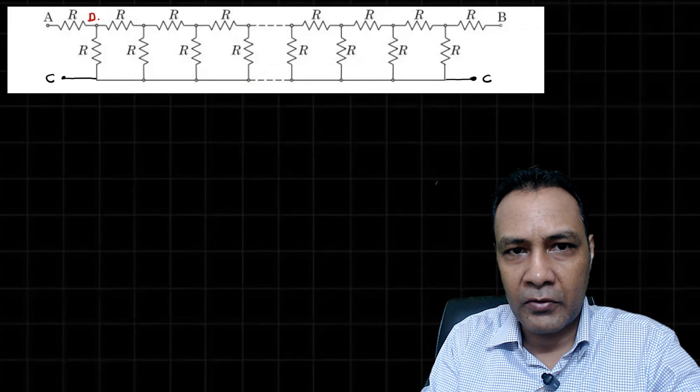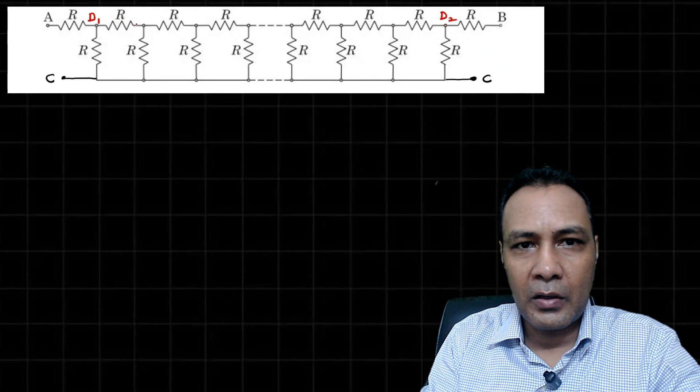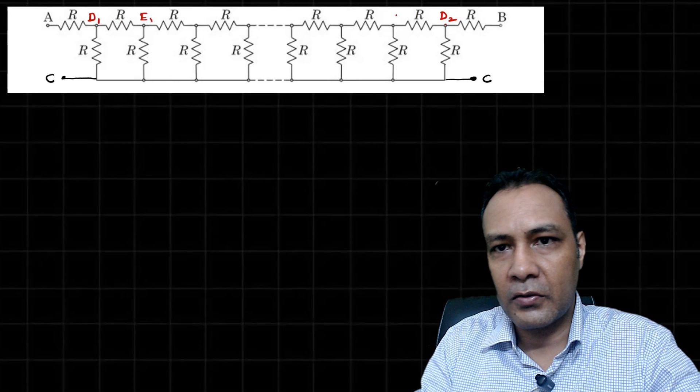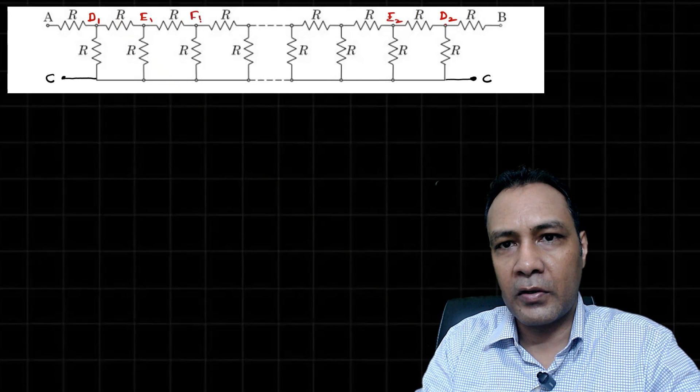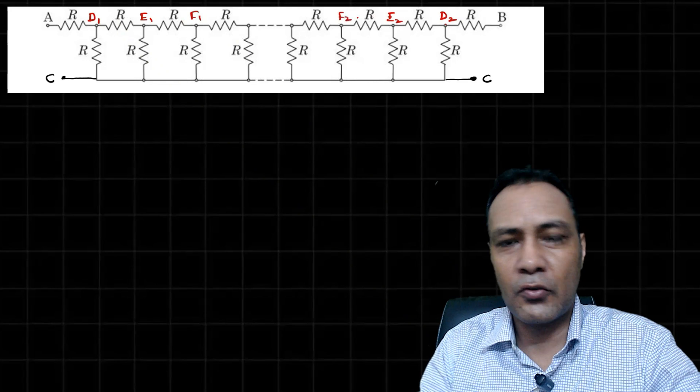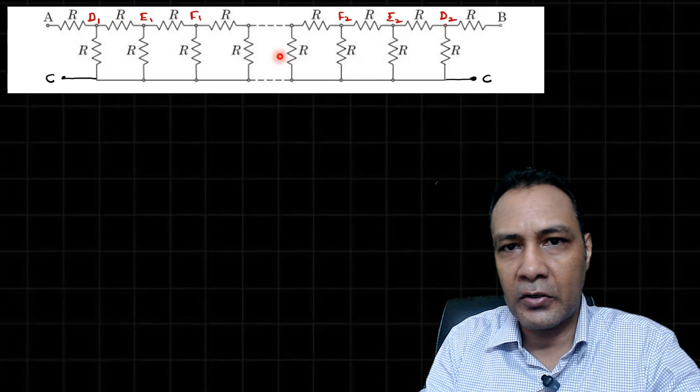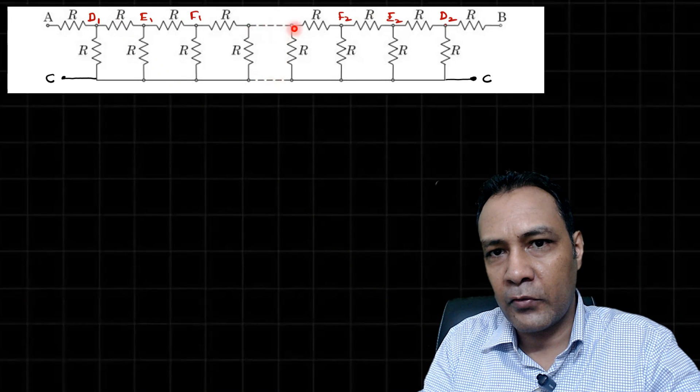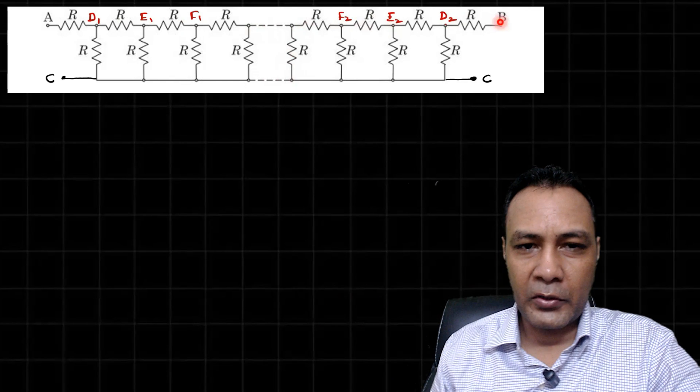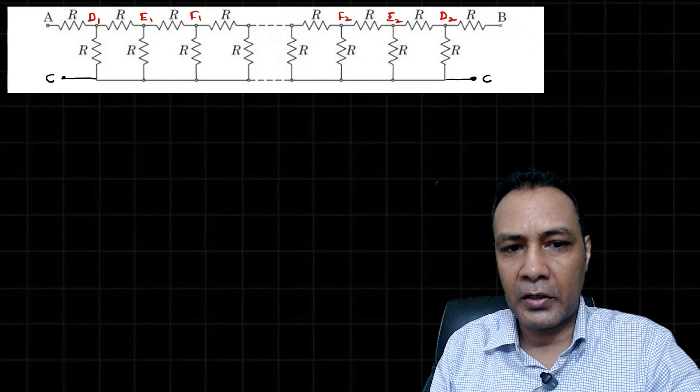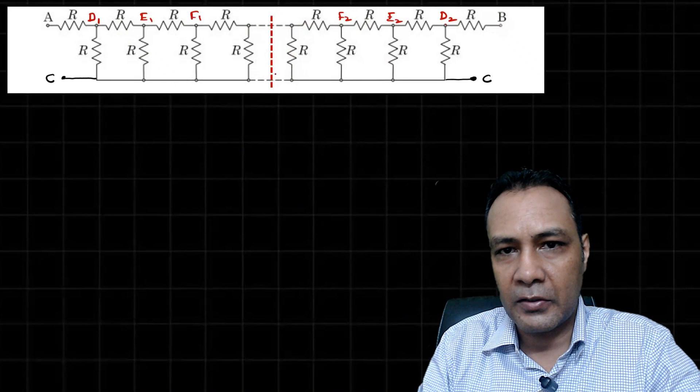This is D1, and symmetrically this is D2. Then E1, E2, F1, F2, and so on. This goes till infinity here and from infinity and then comes to B. Now what I want to do is just cut this ladder from here.